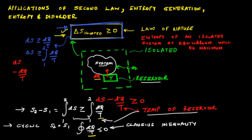For any irreversible process the entropy of an isolated system increases. But if an isolated system attains equilibrium, it means its entropy can no longer increase — there is no possibility of the system undergoing another irreversible process. Therefore the entropy of an isolated system at equilibrium will be maximum, and ds = 0 for an isolated system at equilibrium, because once the system attains equilibrium there is no further change in its entropy.